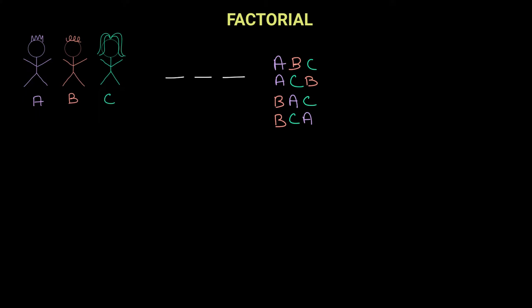Once again, these are not the only possibilities. Let's say we keep C at the beginning of the line. C can be paired with A in the second position or B in the second position. If C and A are the first two positions, that leaves us with B in the third position. If you count the number of possibilities of arranging three different people, you will see that there are six ways of arranging three people, or three objects.